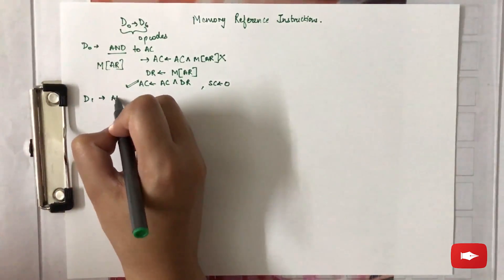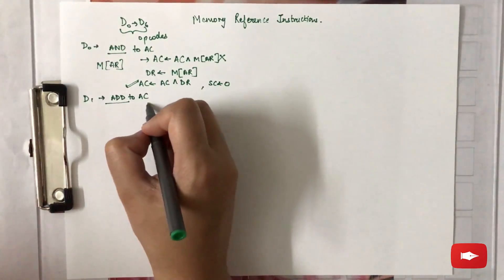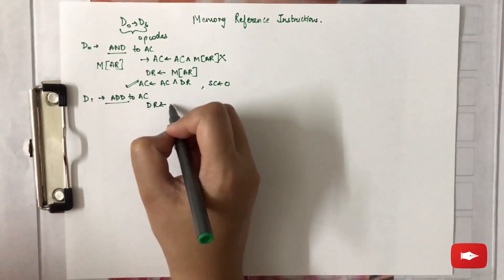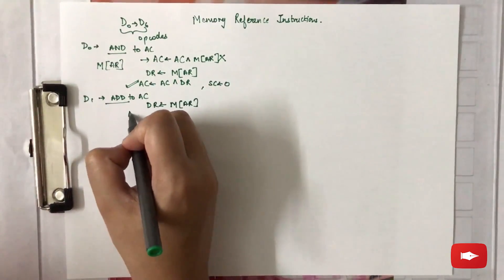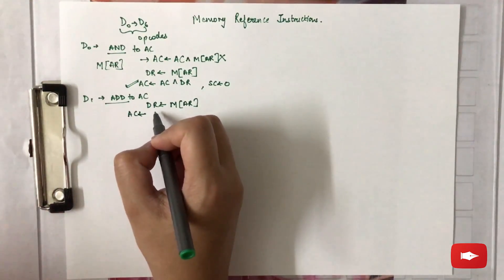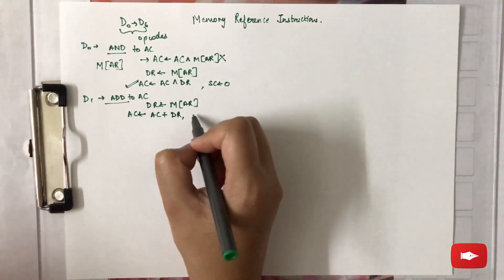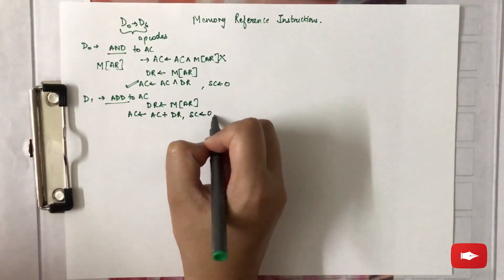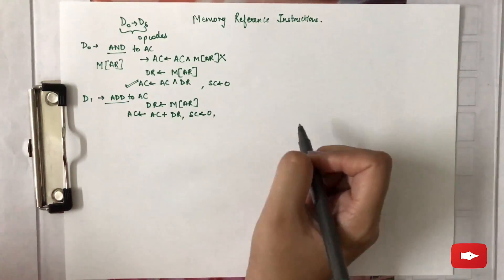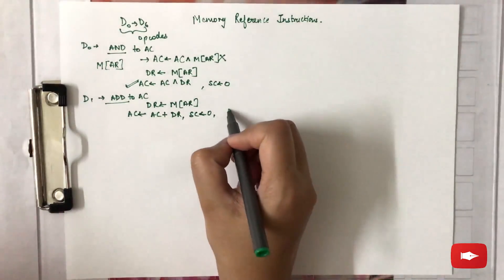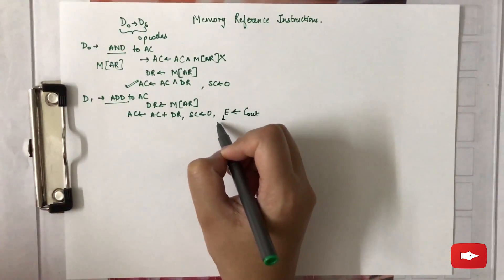The next operation code is ADD to accumulator, which works similarly. First, the contents of the effective address are transferred to DR, and then an ADD operation is performed between the bits of the accumulator and DR. The sequence counter is set to zero. After performing the add operation, if there is an output carry, it is stored in E, the extended accumulator.